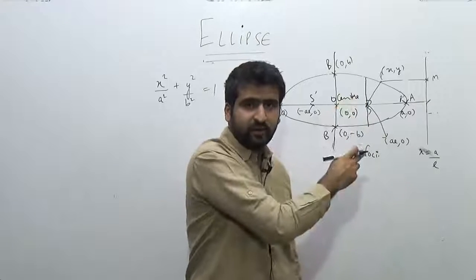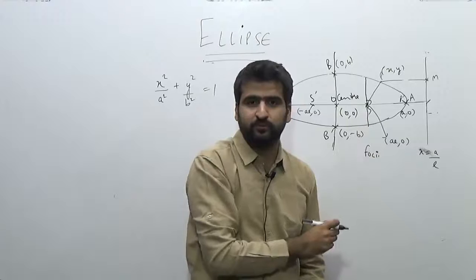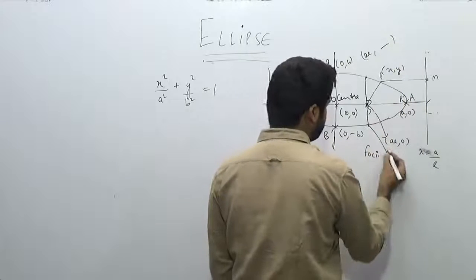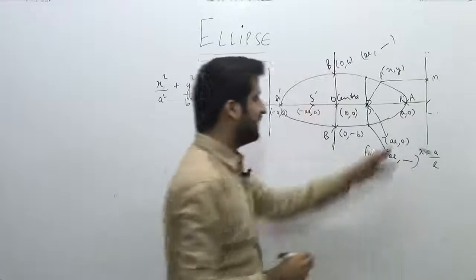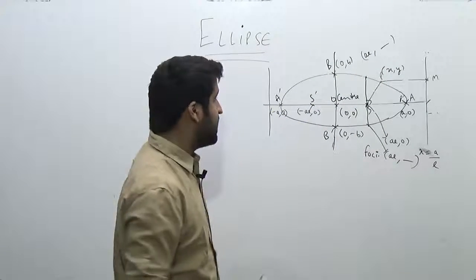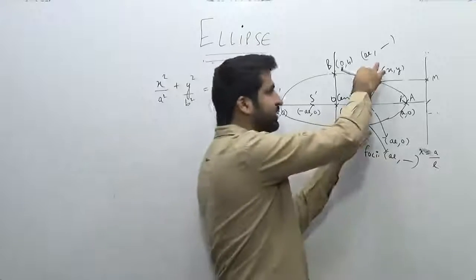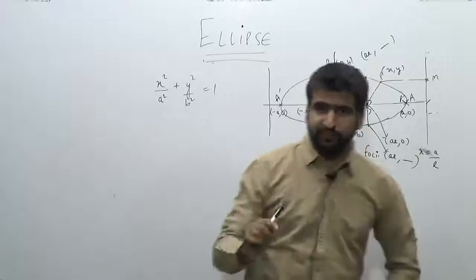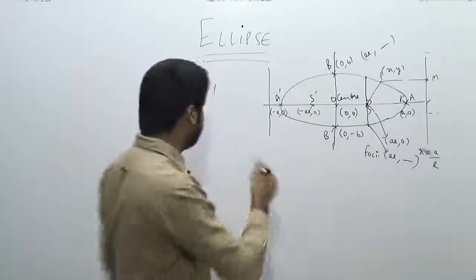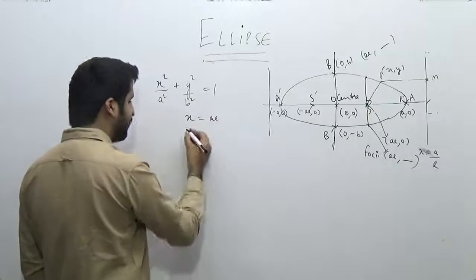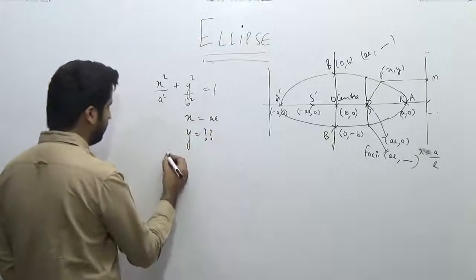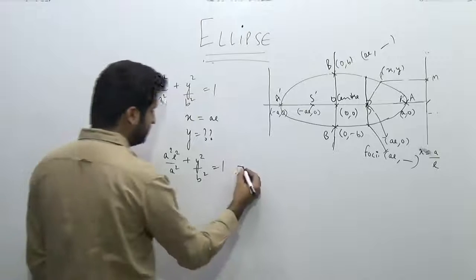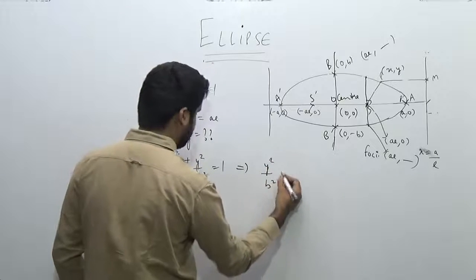Therefore, the two endpoints of the latus rectum have the same abscissa as the focus, which is ae. So the x-coordinate of these two points is ae. I want to find the ordinate (y-coordinate) of these two points — if I find that, I can find the length by subtracting the ordinates. Substituting x = ae into the ellipse equation: a²e² / a² + y² / b² = 1, which gives y² / b² = 1 − e².